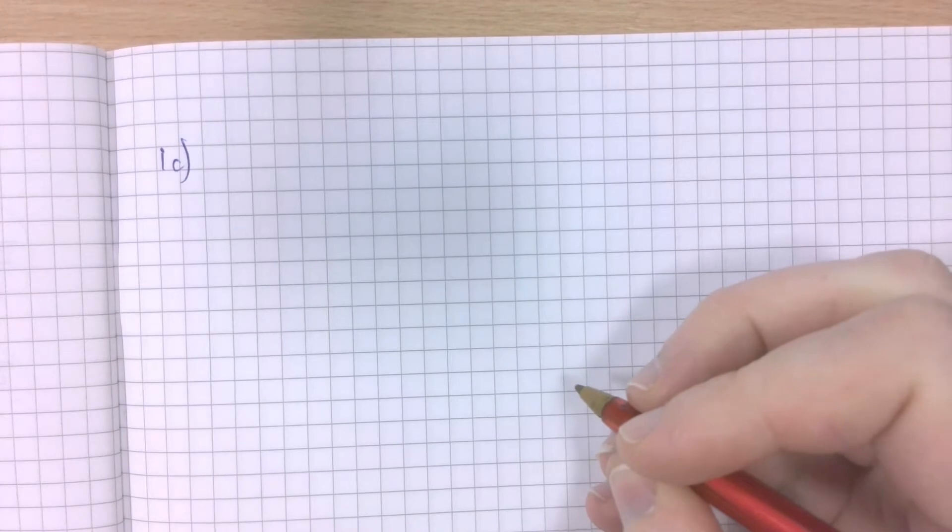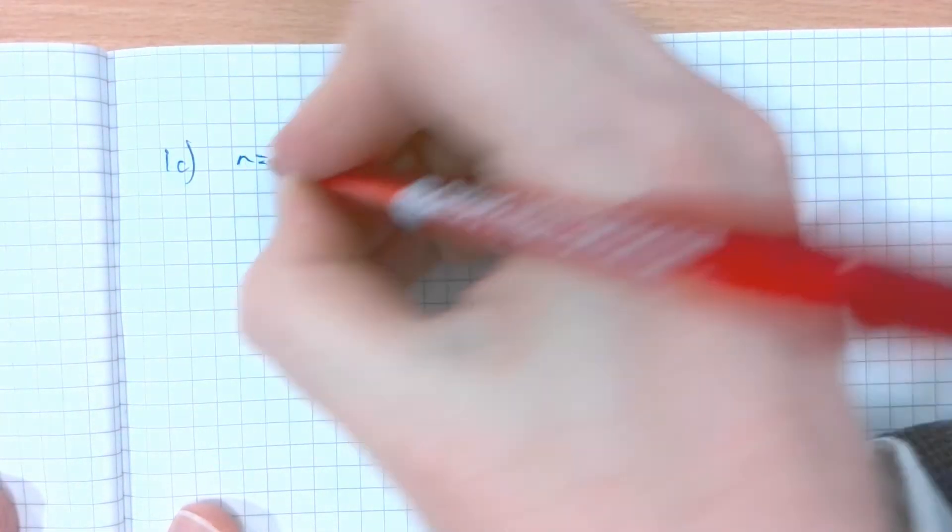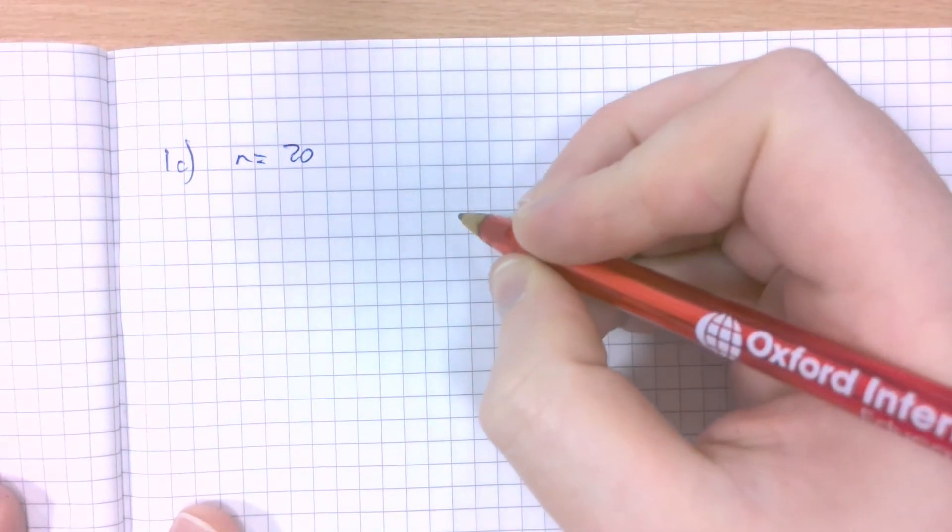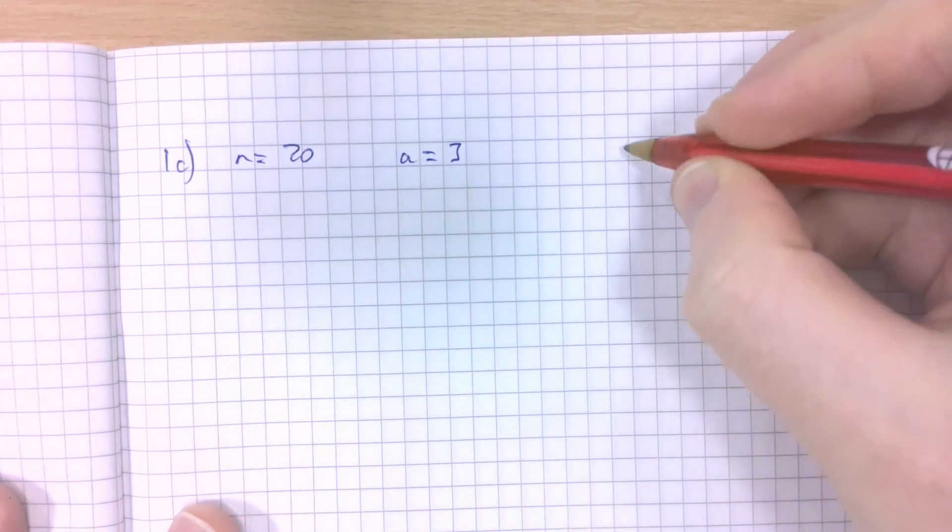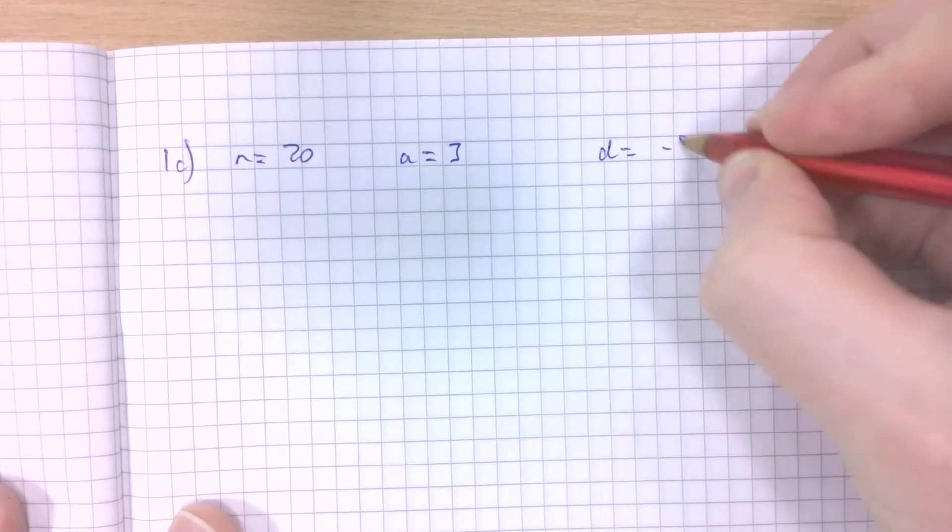Find the sum of the first 20 terms of each of the following series. So first 20 terms, n equals 20. And from 1c, the first term is 3, a equals 3. The common difference is 5, d equals negative 5.